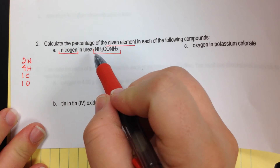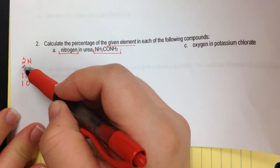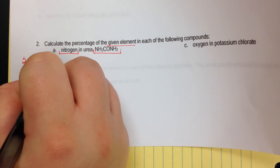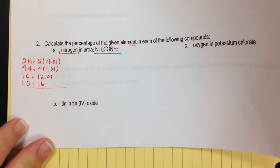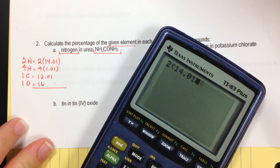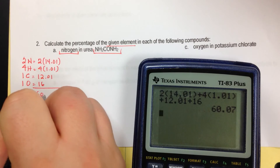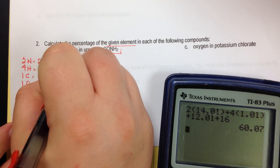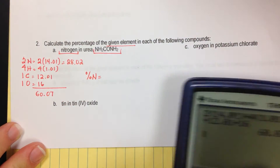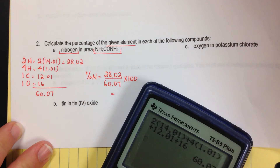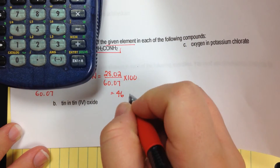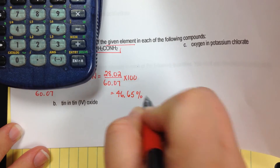After you do these several times, you start to memorize the masses. The molar mass calculation is: 2 times 14.01 plus 4 times 1.01 plus 12.01 plus 16, giving a total molar mass of 60.07. Since I'm only finding the percent of nitrogen, I only care about how much mass nitrogen contributed — that's 28.02 divided by 60.07 times 100 — giving 46.65% nitrogen.